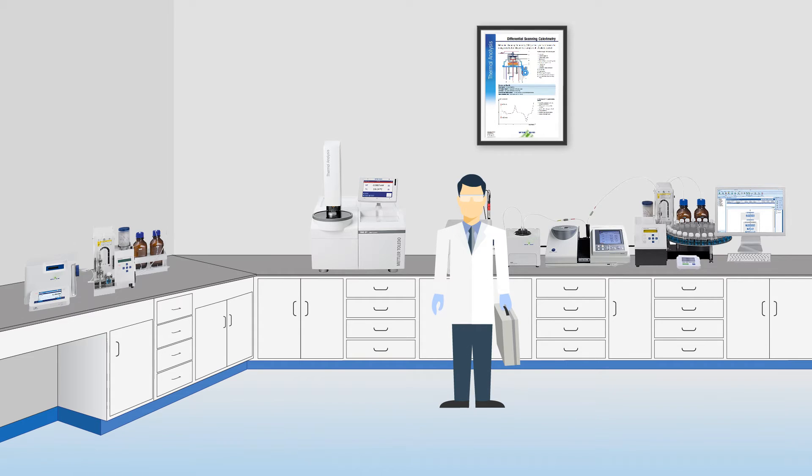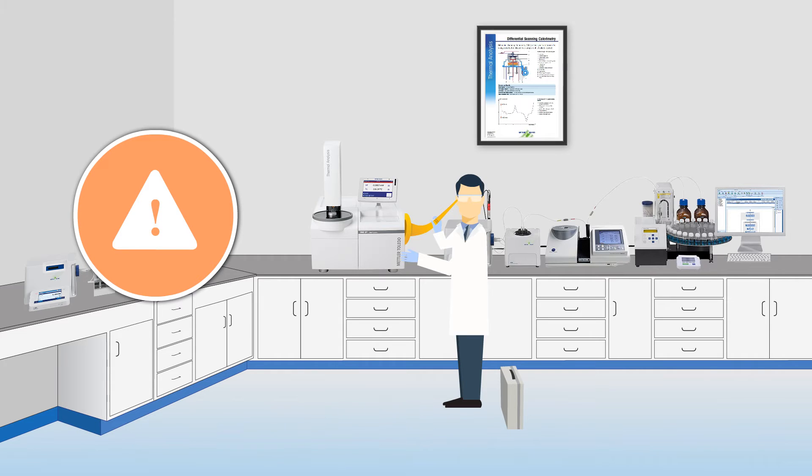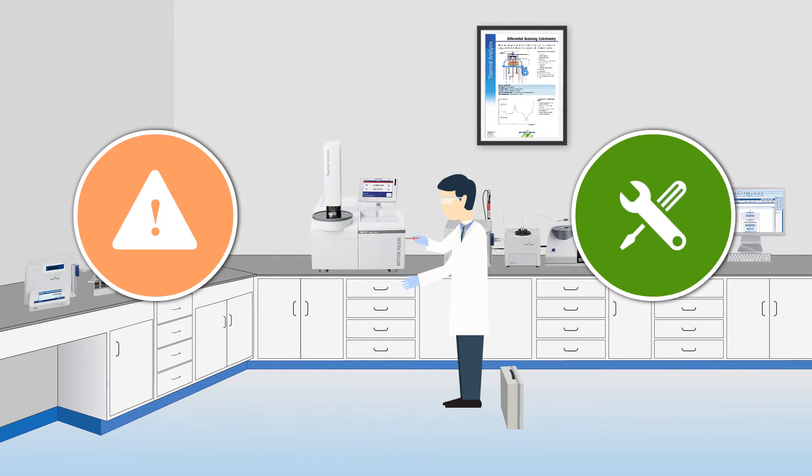In order to achieve accurate results, an instrument has to be regularly calibrated, which means determination of deviation from the expected behavior. If a deviation is detected, an adjustment is necessary to correct for the difference.